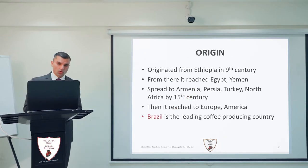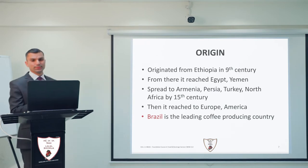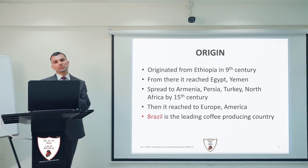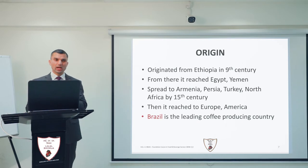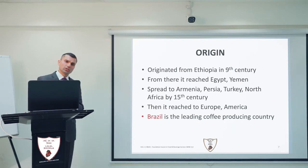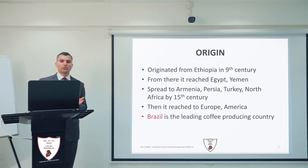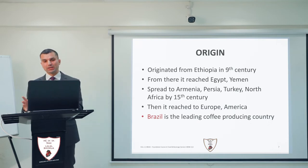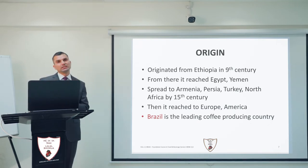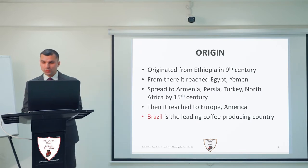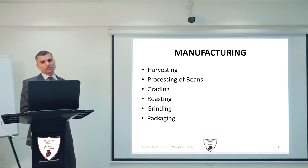Coming to the origin of coffee, coffee originated from Ethiopia around the 9th century. From Ethiopia it reached Egypt, Yemen, and slowly by about the 15th century it spread to Armenia, Persia, Turkey, and the northern part of Africa. From there it reached to Europe and America. At present, Brazil is the leading coffee-producing country in the world.